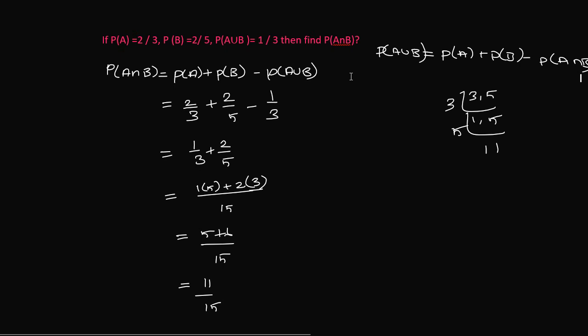P(A intersection B) is on the plus side. So A union B right side of A union B equals P(A) plus P(B) minus P(A union B).